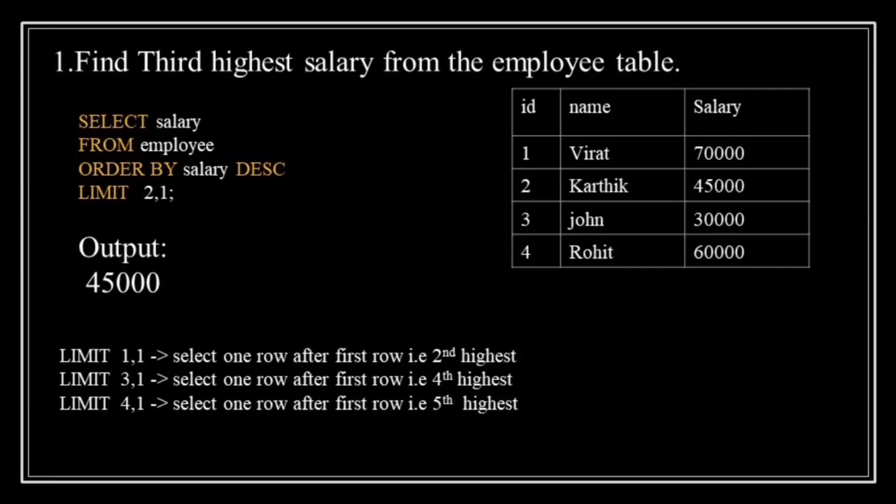Let's understand the query. 'SELECT salary' selects the salary column from the employee table. 'FROM employee' indicates the data is being retrieved from the employee table. 'ORDER BY salary DESC' sorts the result by salary in descending order, meaning the highest salary appears first. If you want to fetch the lowest salary, use ORDER BY salary ascending. 'LIMIT 2, 1' skips the first two rows and returns the next row.